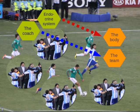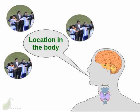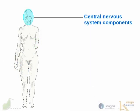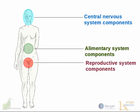Only there's not just one coach — there are several, and they're not all in the same place. So let us start with the location of the components of the endocrine system in the body. There are components located in and around the central nervous system, components located within the alimentary system, and components located within our reproductive system.